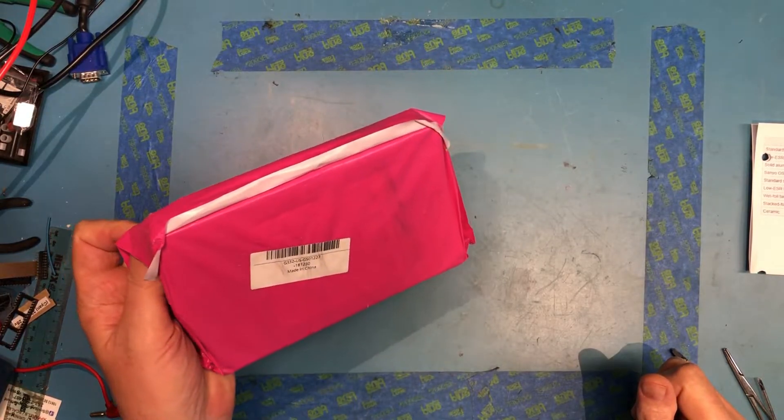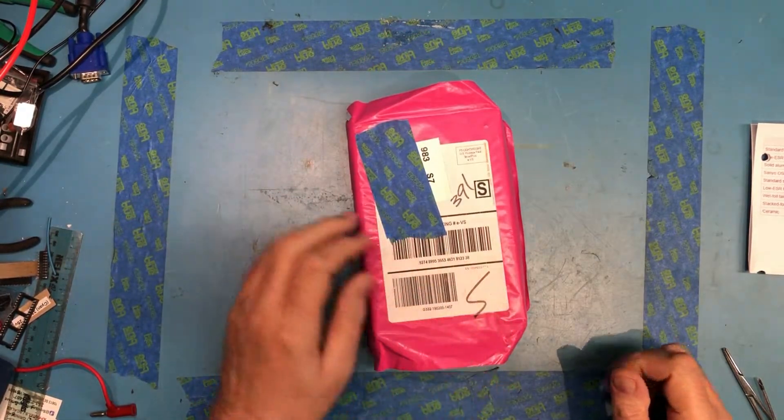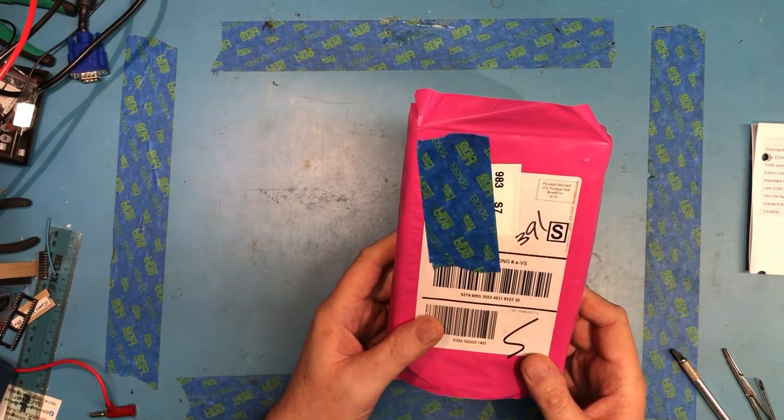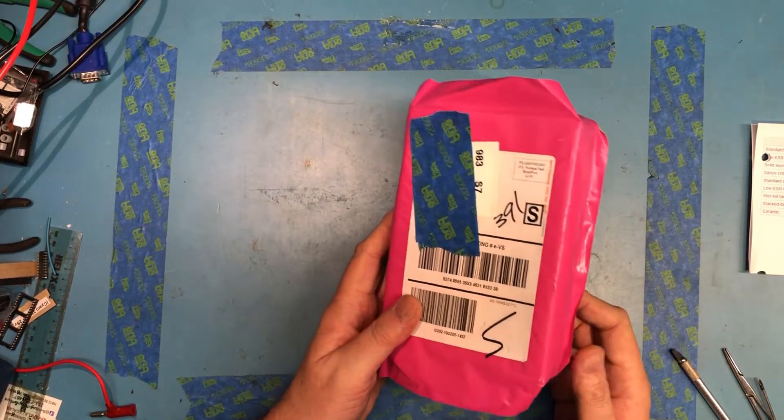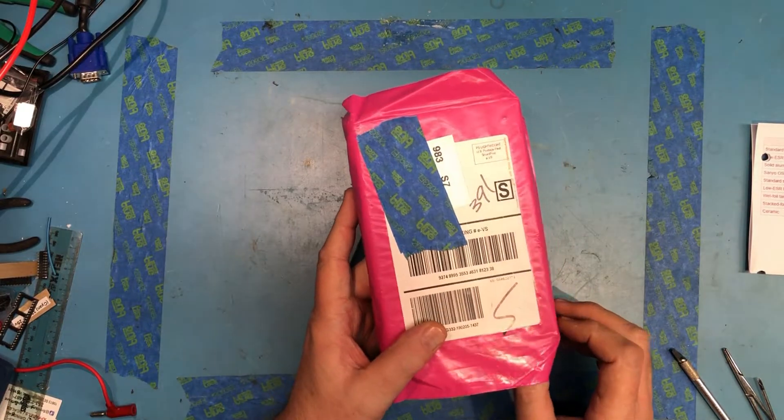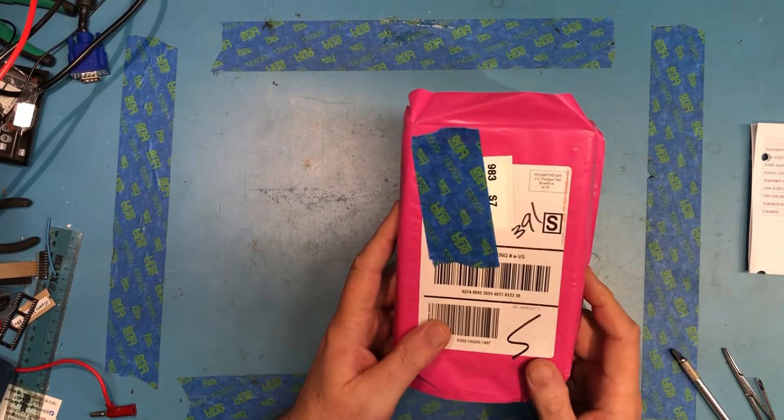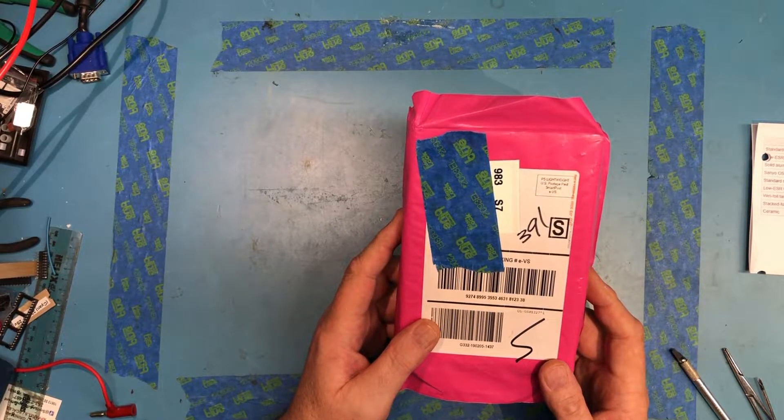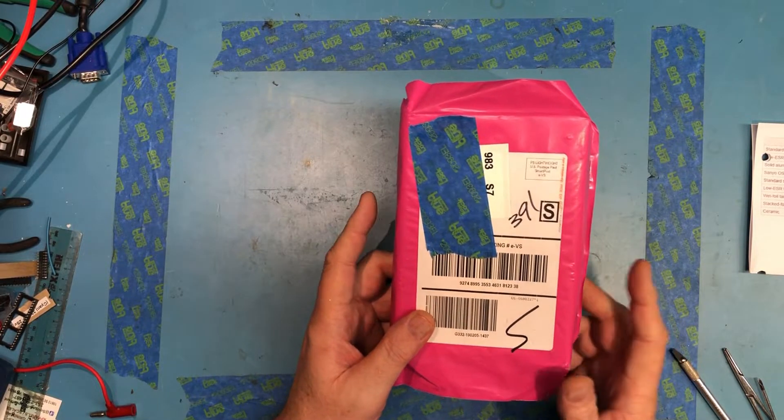So I went ahead and ordered a cheap assortment of electrolytic capacitors on eBay just to kind of see what they were. I'm not expecting a whole lot from these. They're obviously not going to be Nichicon or Panasonic or a name that I recognize as decent quality. I did look for a U.S. seller.